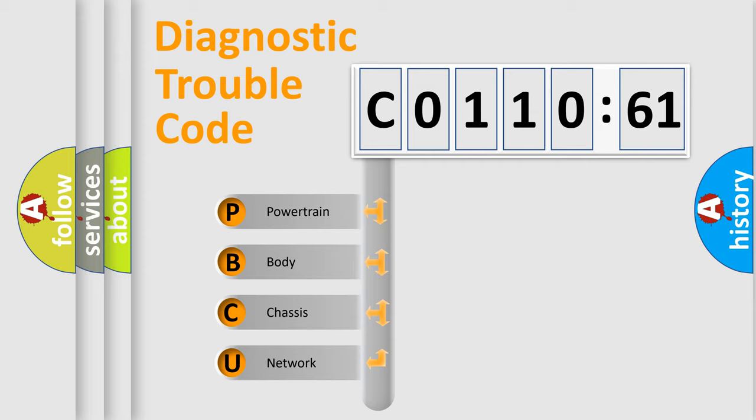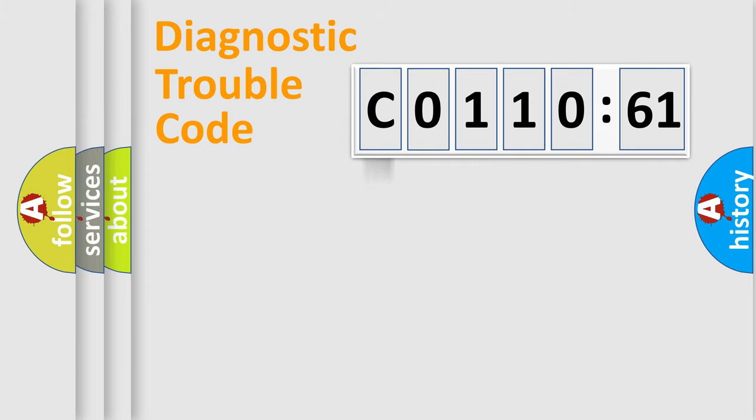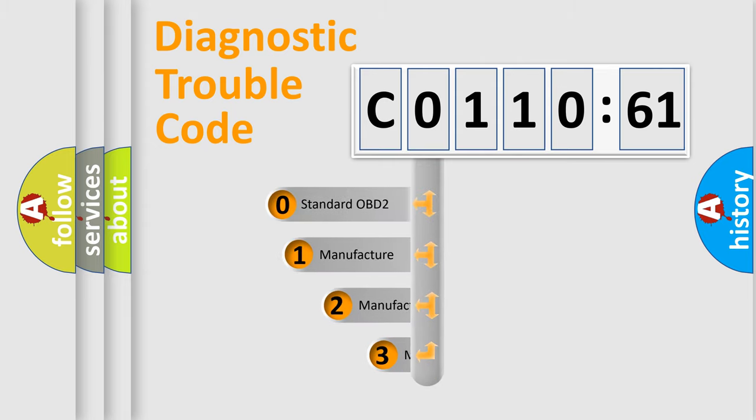We divide the electric system of automobile into four basic units: Powertrain, body, chassis, and network. This distribution is defined in the first character code.